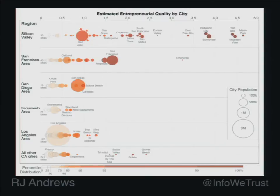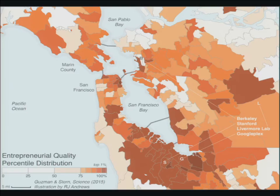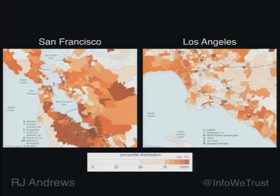Once we convince you that we can do this for cities, we can really start to have some fun because we can start showing you maps. Here's the Silicon Valley region. But going back to interpolation, we can show you the Bay Area and Los Angeles on their own. But because they're juxtaposed and next to each other, you can understand what a difference there is in entrepreneurial quality between the two regions.